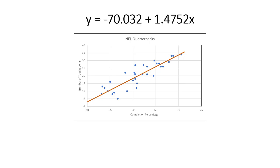That equation is that y, my predicted number of touchdowns, is equal to negative 70.032. Again, that's my y-intercept, plus the slope of that line, which is 1.4752 times x. And x is my predictor variable.